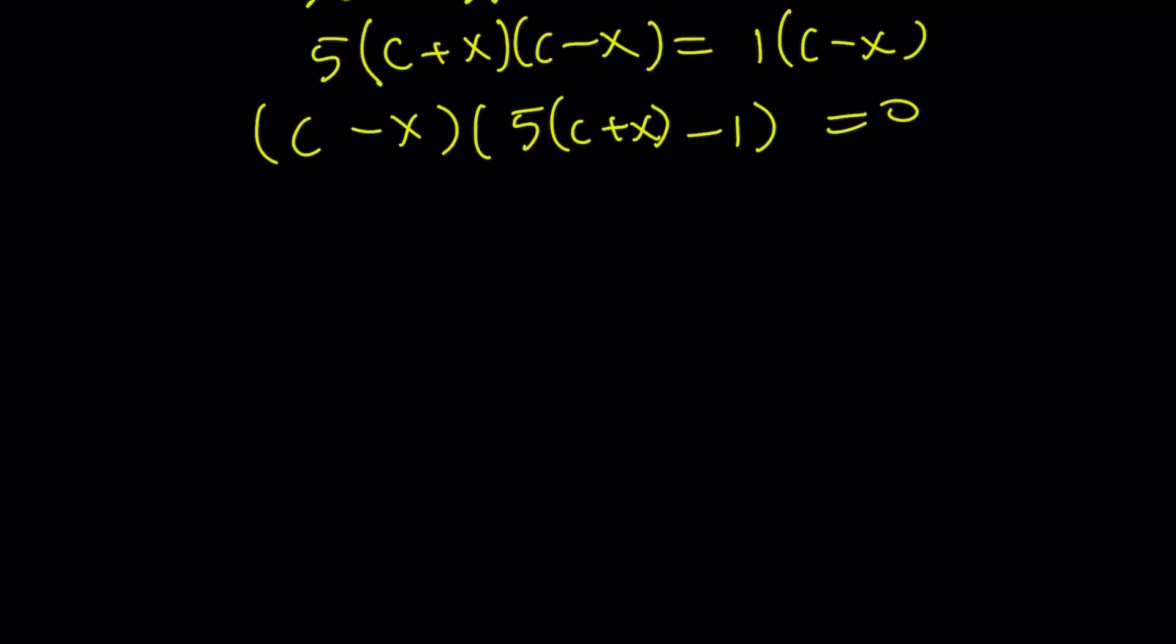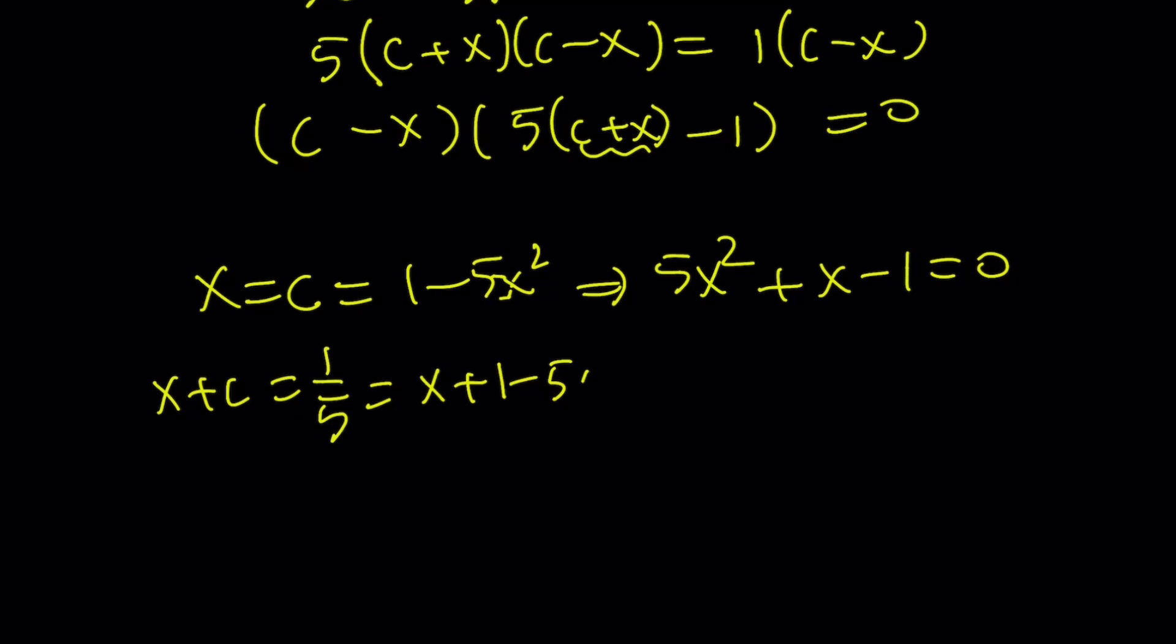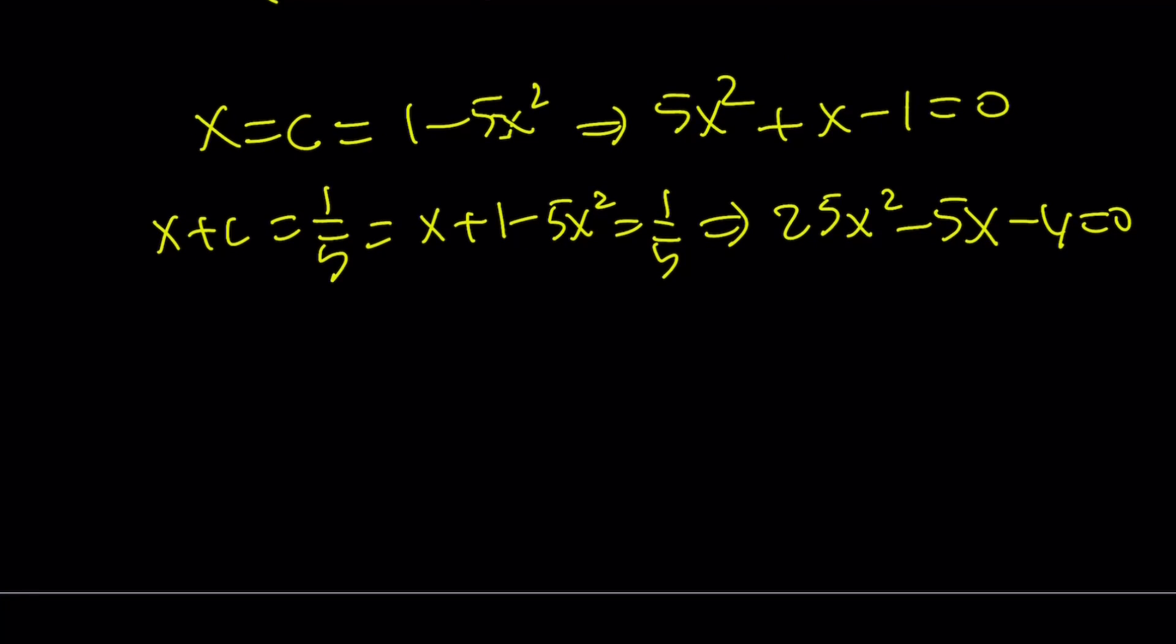We got two factors. The first one means x equals c. And x equals c means c is 1 minus 5x squared. From here, we get 5x squared plus x minus 1 equals 0. The second equation means x plus c is equal to 1 fifth. But c was 1 minus 5x squared. So from here, multiplying by 5 gives us 25x squared minus 5x minus 4 equals 0. We get the exact same equations. And the solutions are the same as before: x equals 1 plus minus root 17 over 10, and x equals negative 1 plus minus square root of 21 over 10.